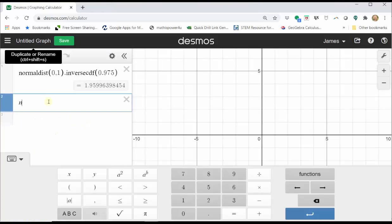With the cursor in cell two, we enter n equals, open parenthesis, open parenthesis, z times, let's use s instead of sigma for standard deviation, close parenthesis, divided by e, tab or right arrow, close parenthesis, and then squared. Notice we have an option to add sliders for z, s, and e.